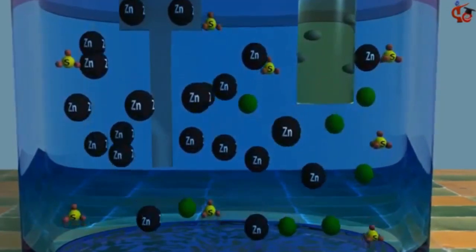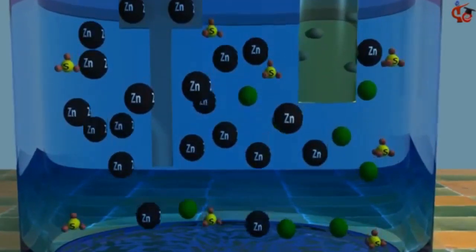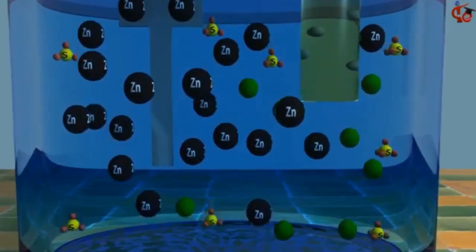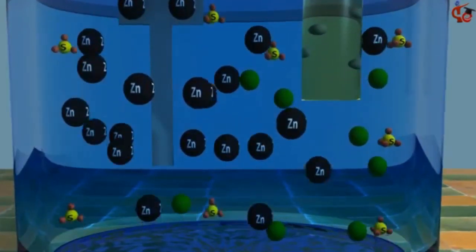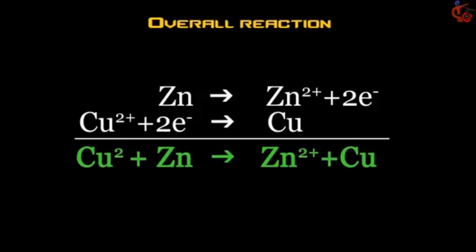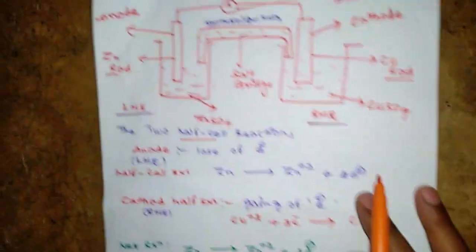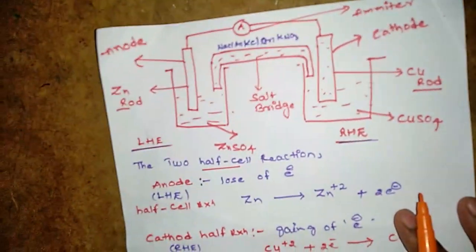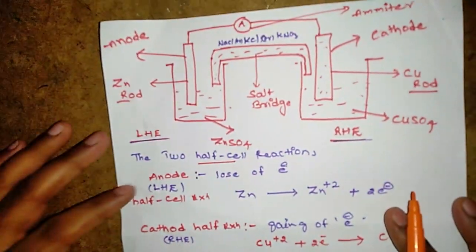The overall cell reaction can be written like this. See here, this is the galvanic cell diagram.